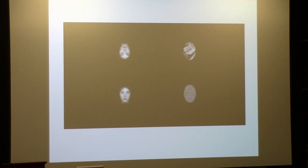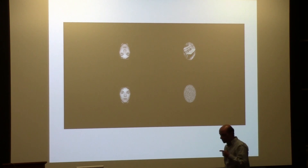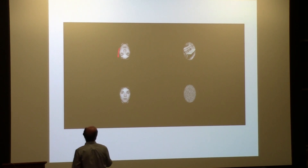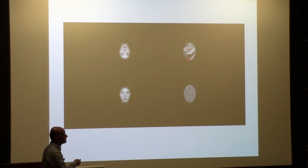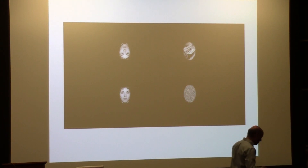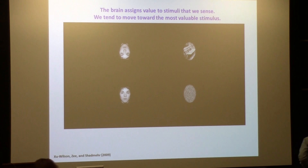What did you look at first? Did anybody look at this first? So let's go through what happened in your brain when I presented that image on the screen and your brain made a decision to move your eye over to the left — maybe look at the face, maybe some of you looked at this one. So let's see what happened when we did this experiment. What happened so that your brain made a decision to look where it did look? What we're going to talk about is this idea that your brain assigns value to stimuli that you sense, and you tend to move toward the most valuable stimulus.